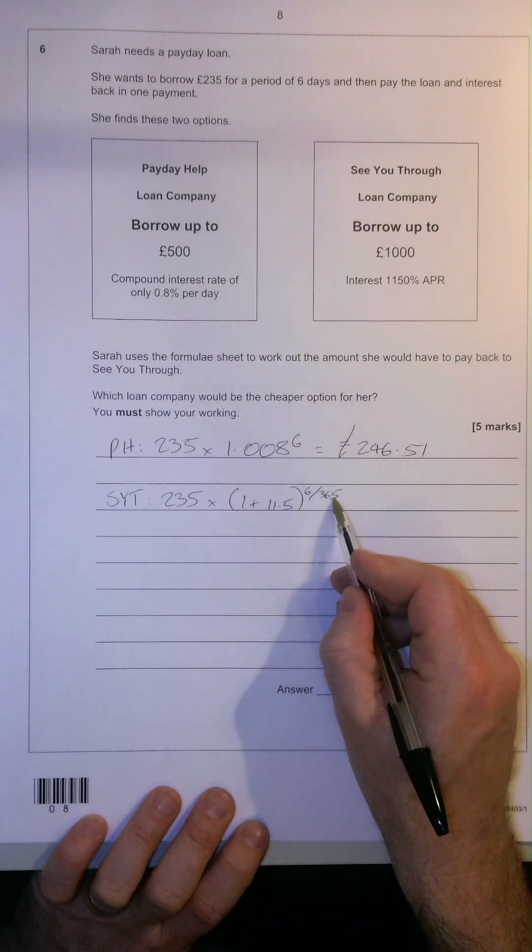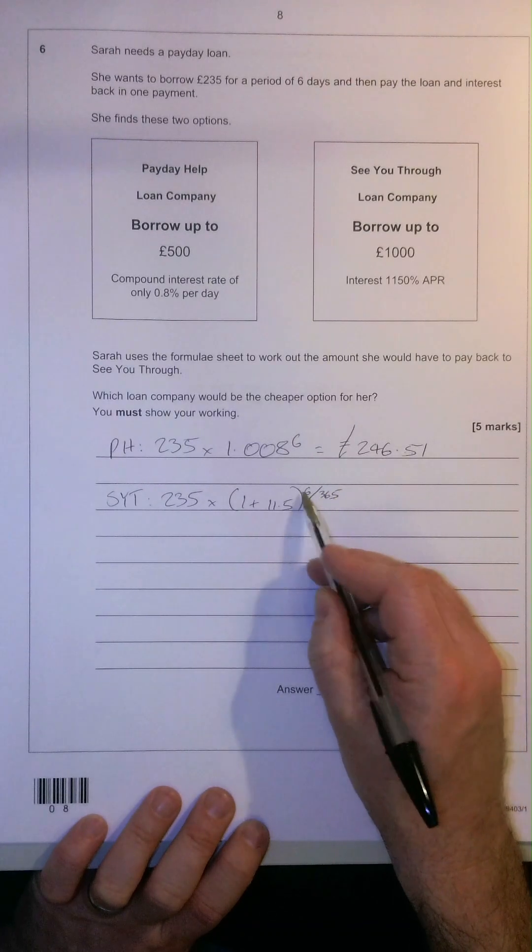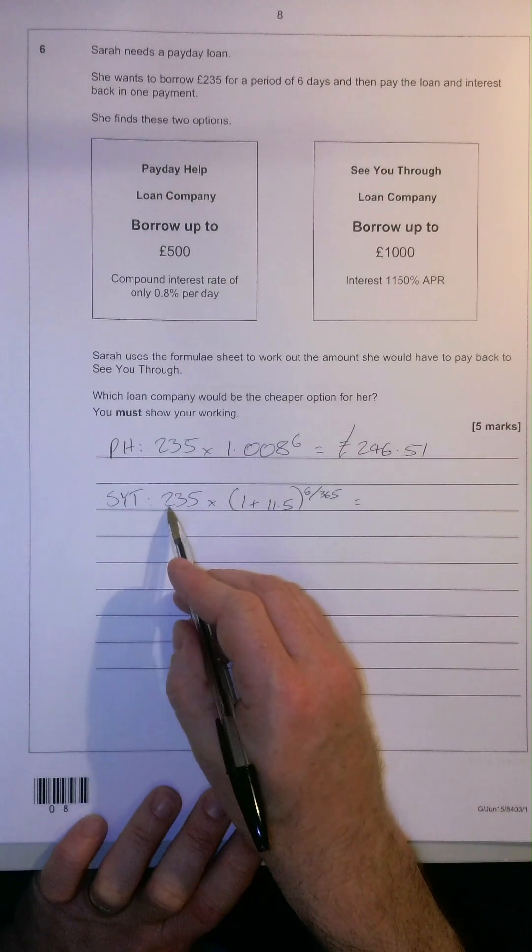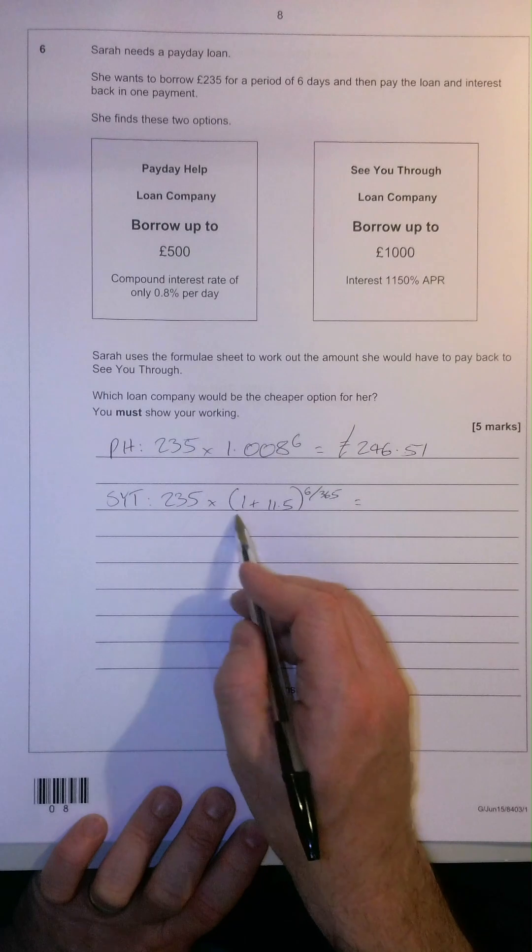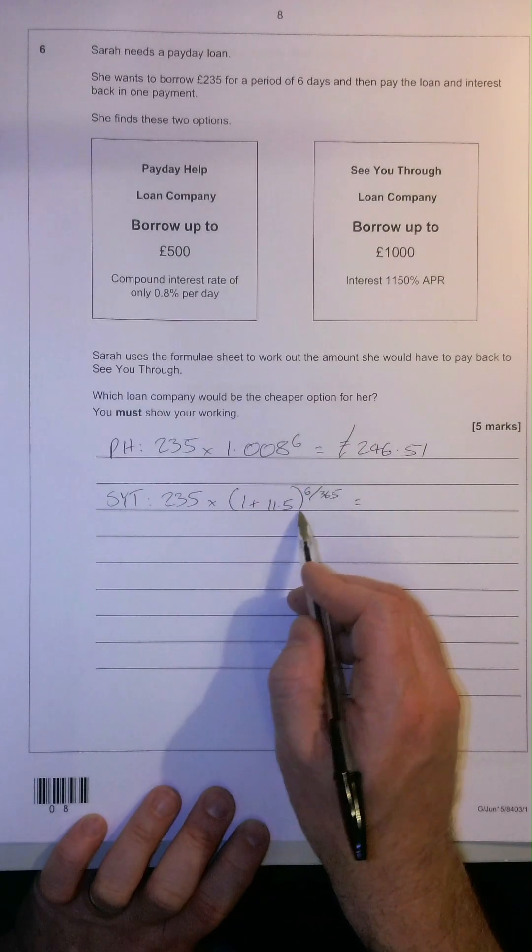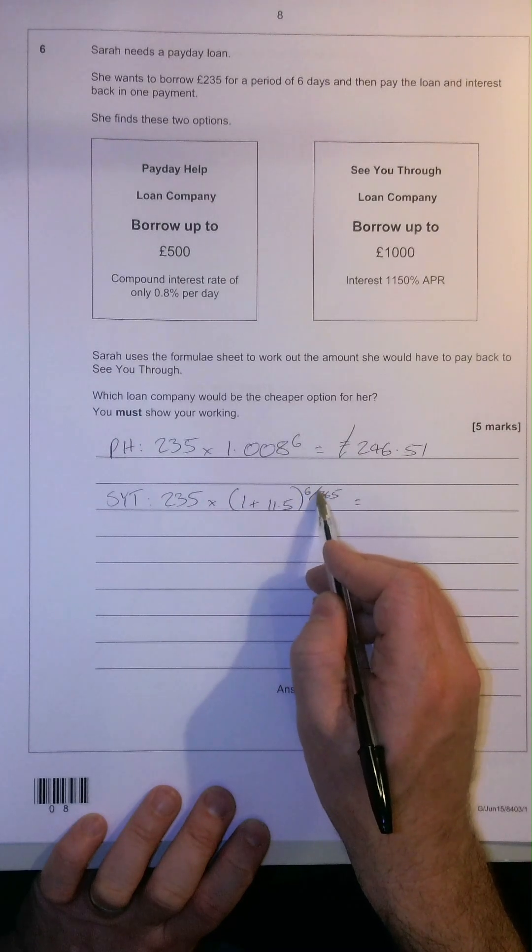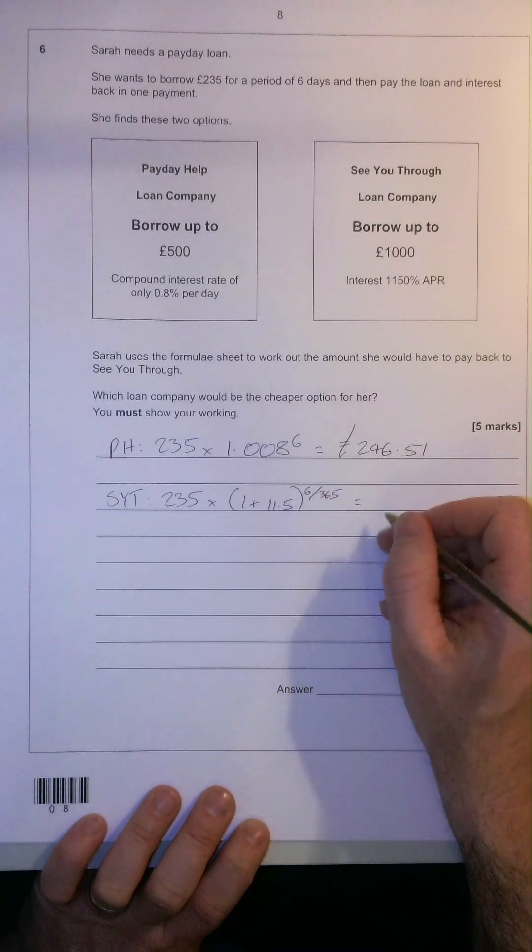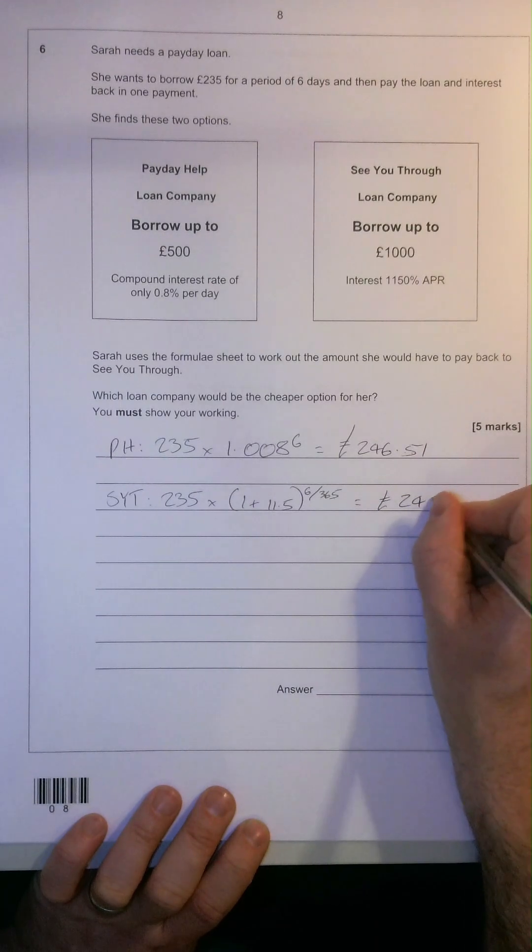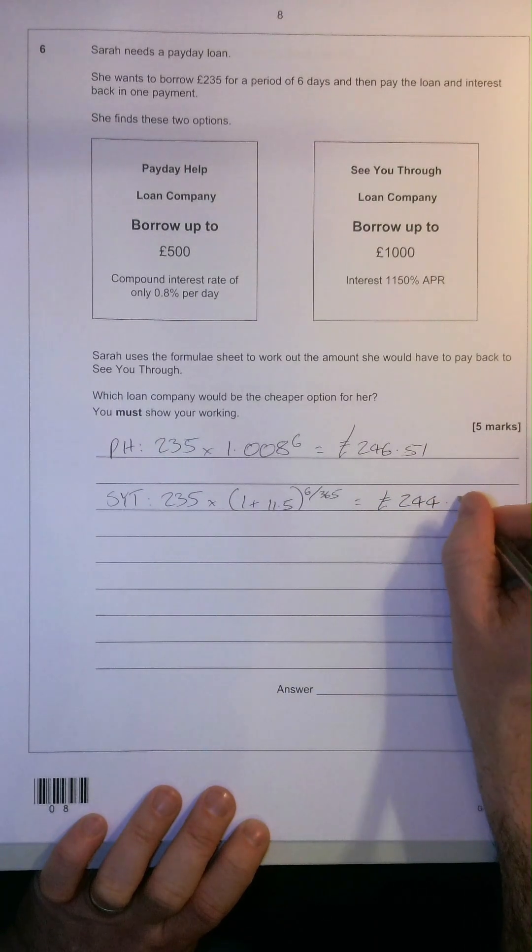Of course, assuming that we're not in a leap year. 6 over 365. So typing that into our calculator, 235 times open bracket 1 plus 11.5 closed brackets to the power of 6 over 365, that will give us 244.96.